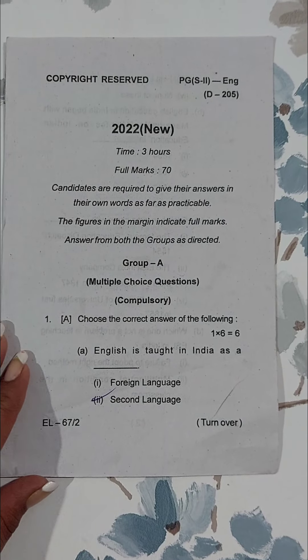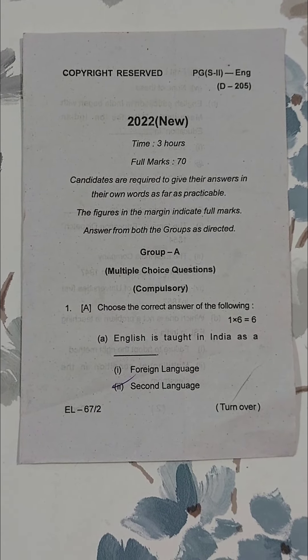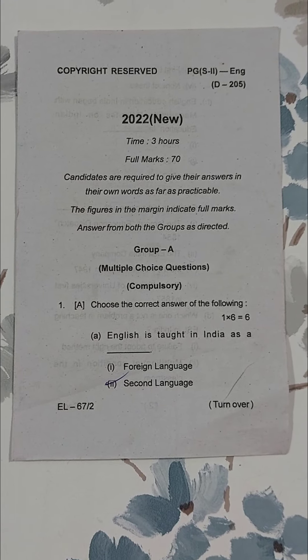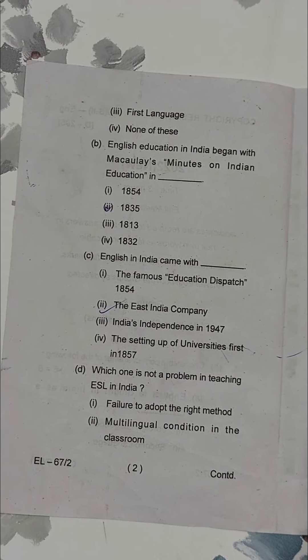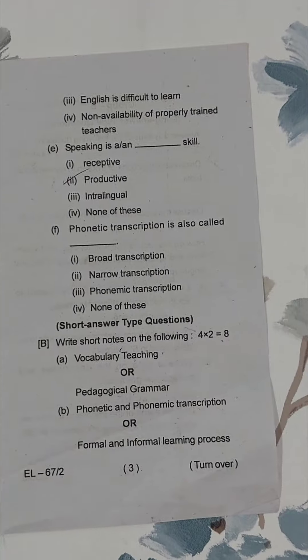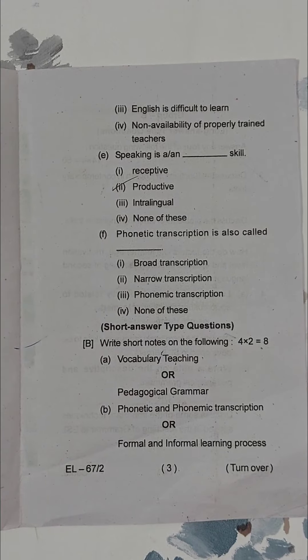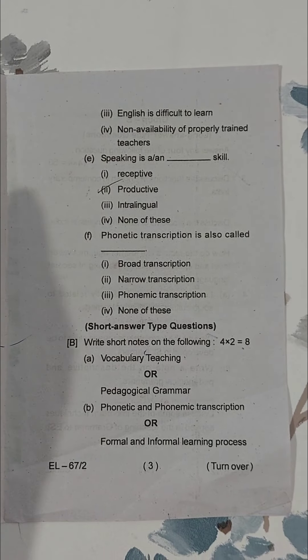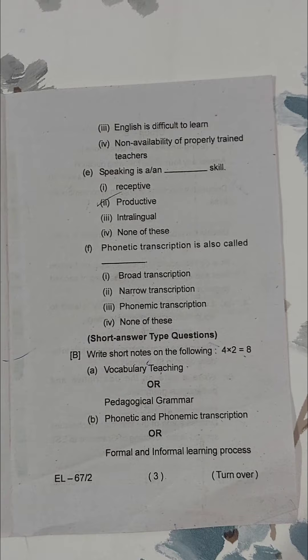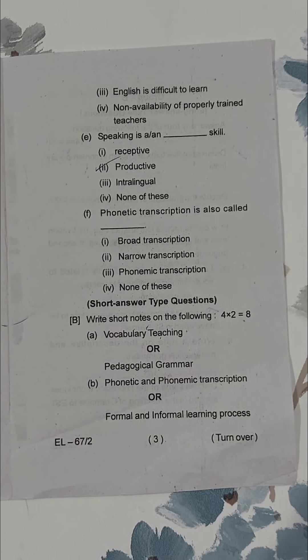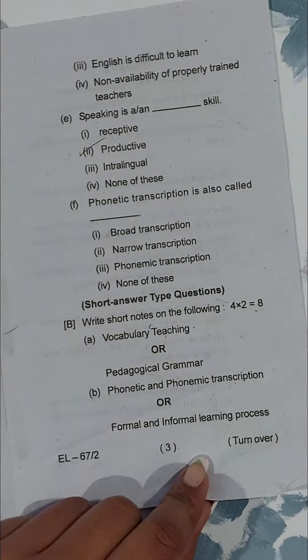Let's see these question papers one by one. This is paper number five, which is of English Language Teaching. Here you will get six MCQs of one mark each. In Group A there are six MCQs, and then short answer type questions. In the short answer section you have to answer two questions of four marks each — one from A and one from B.